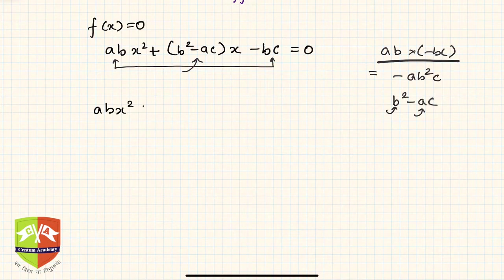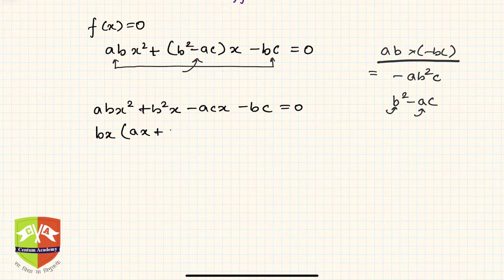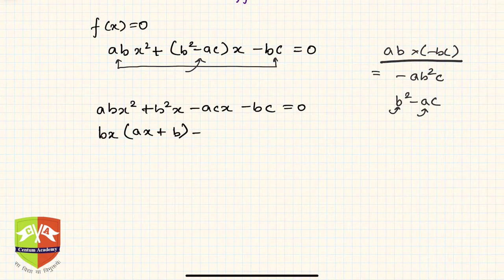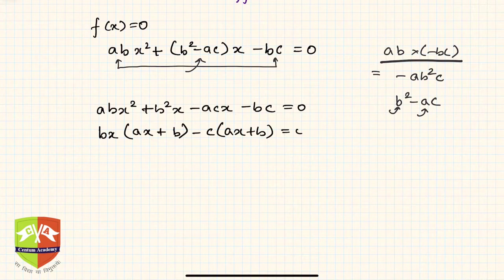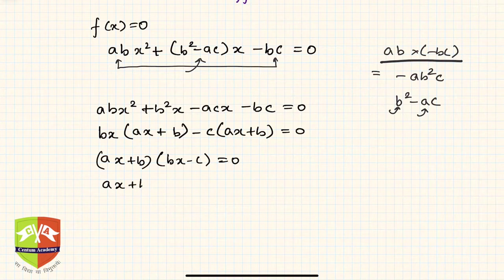Now we rewrite the equation as abx² + b²x - acx - bc = 0. Taking bx common from the first two terms gives bx(ax + b), and taking -c common from the last two terms gives -c(ax + b), so we get (ax + b)(bx - c) = 0.